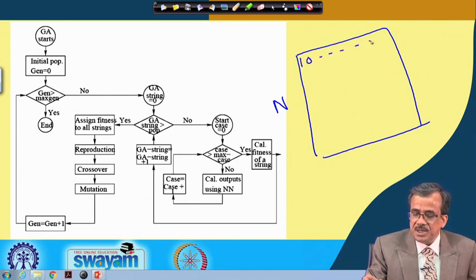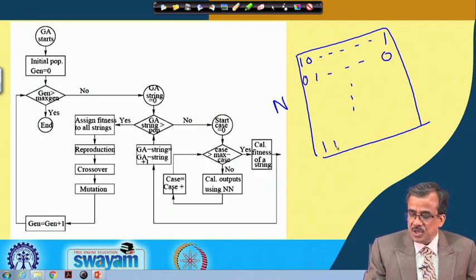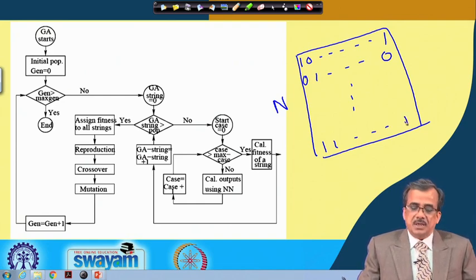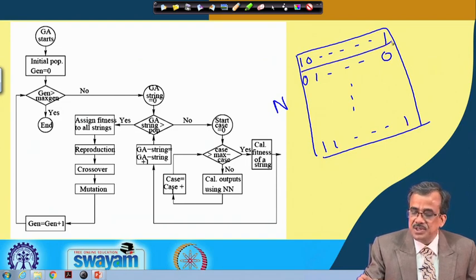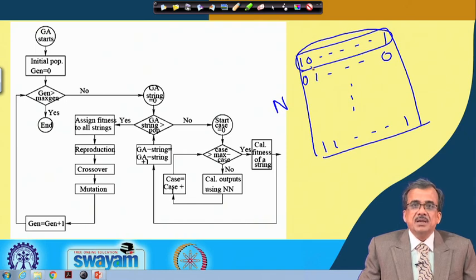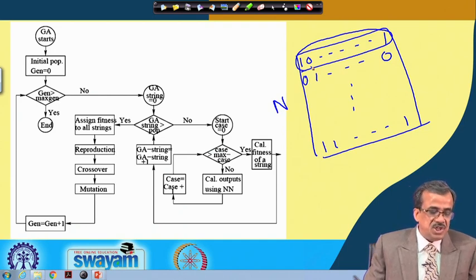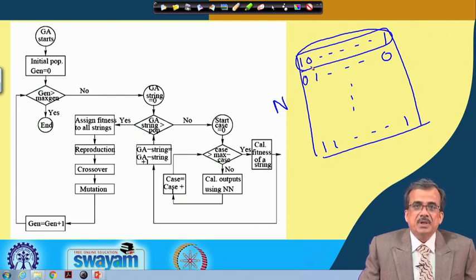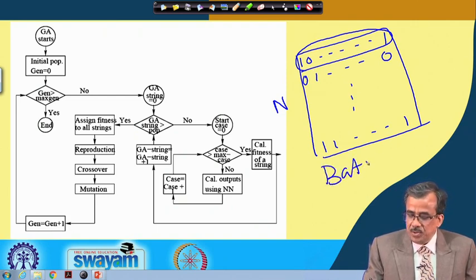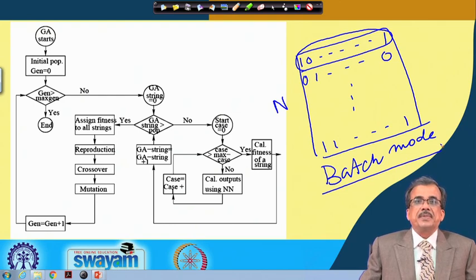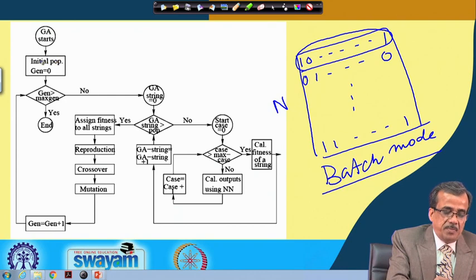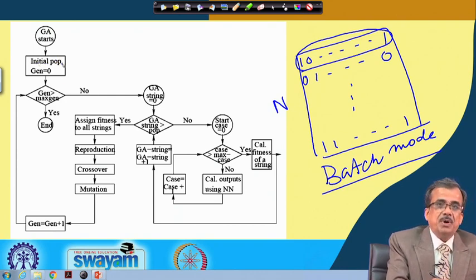Suppose the first solution is something like this — this is a binary coded GA — the second solution is something like this, and the last solution is something like this. If I concentrate on a particular GA string, say the first GA string, it will carry the full information of this particular network. GA starts with a population of solutions; we create the initial population at random and set generation equal to 0.